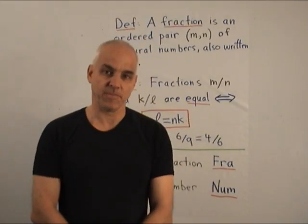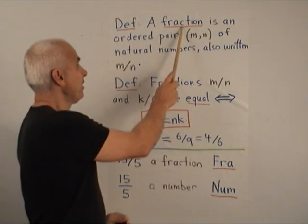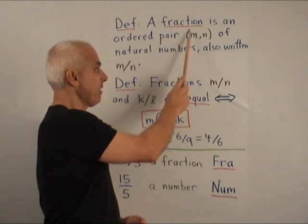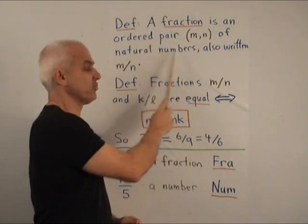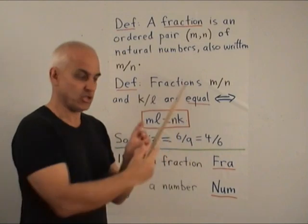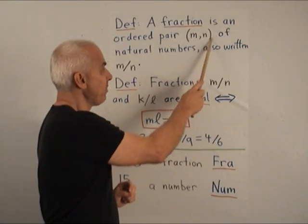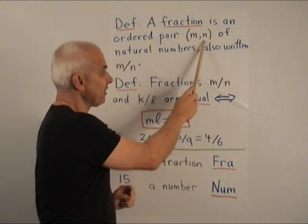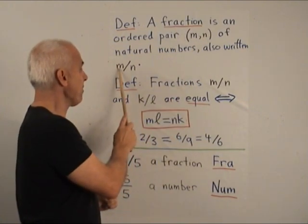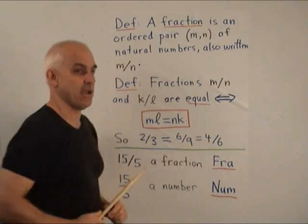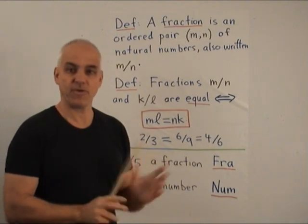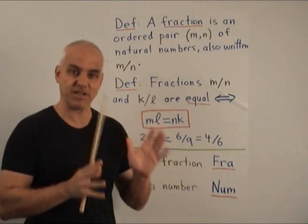So here's our main definition. A fraction is an ordered pair of natural numbers. So it's just two natural numbers, one followed by the other, an ordered pair. And we also write this ordered pair in the form m slash n. That's what a fraction is, a mathematical definition.